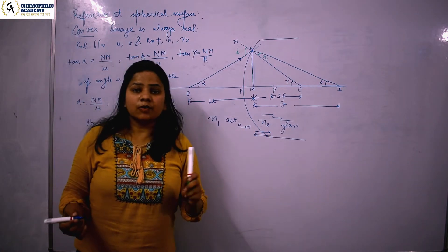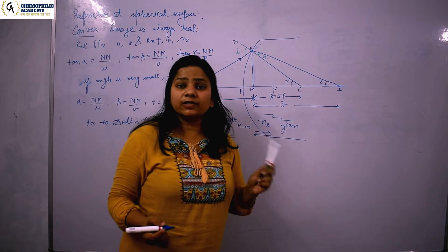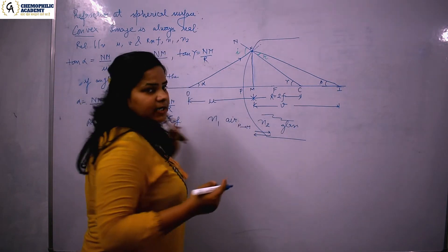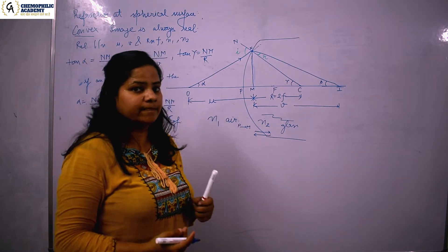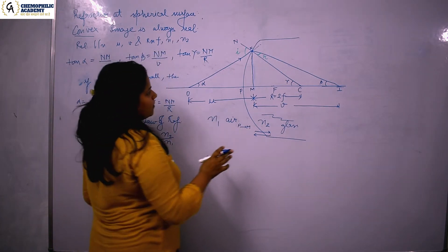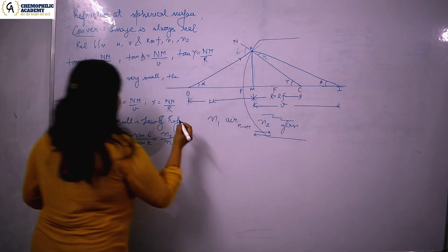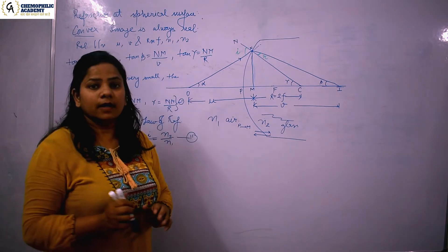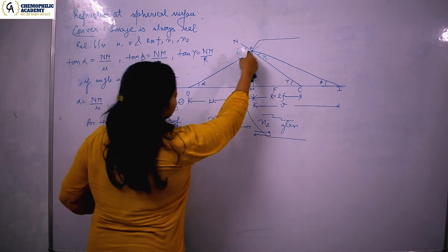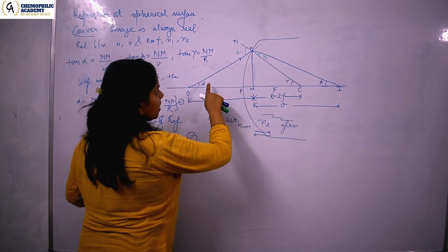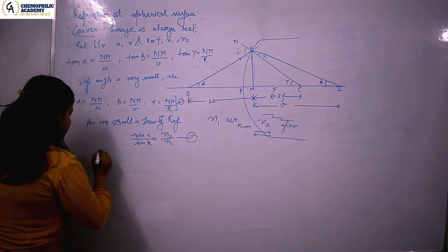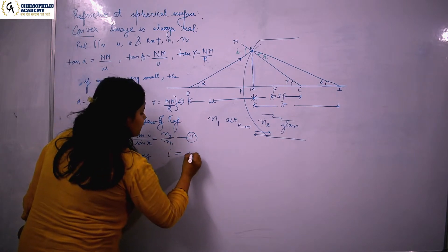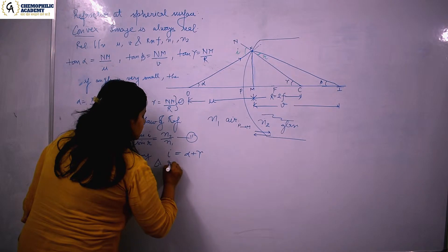We have all the relations in terms of alpha, beta, and gamma, but in Snell's law we have i and r. So we need to find the relation between i, r and alpha, beta, gamma using the exterior angle property. From the geometry, it is clear that i = alpha + gamma, and r = gamma - beta.